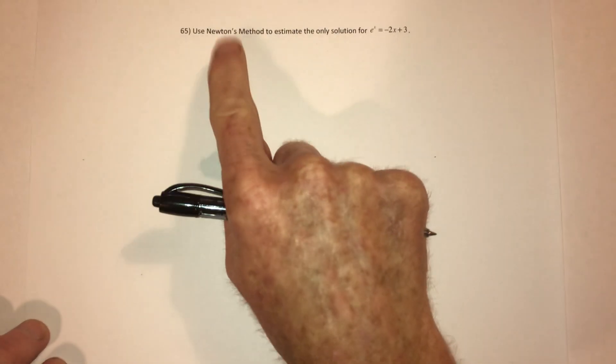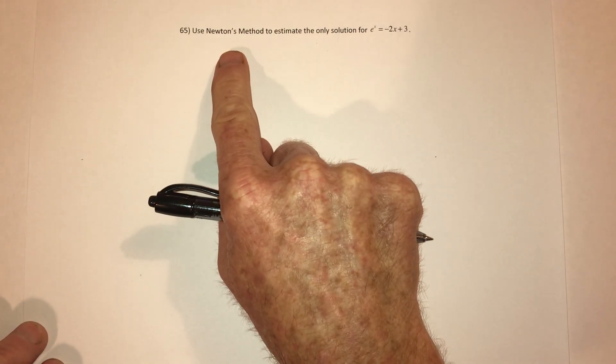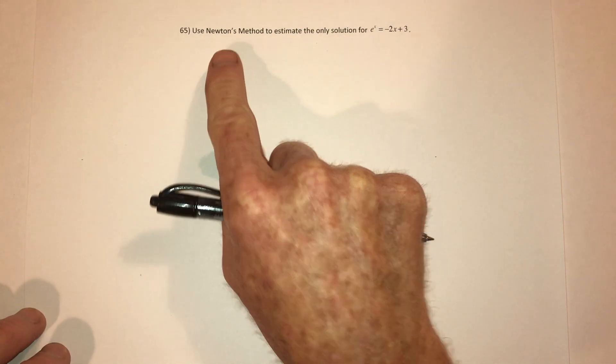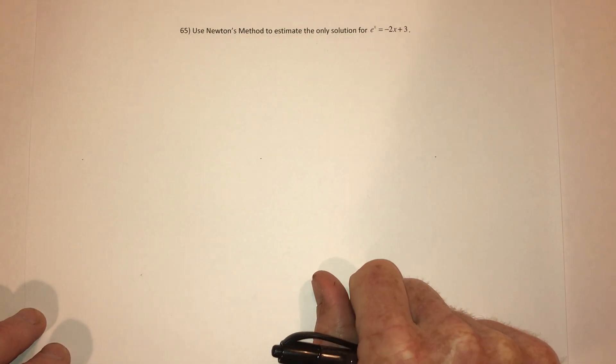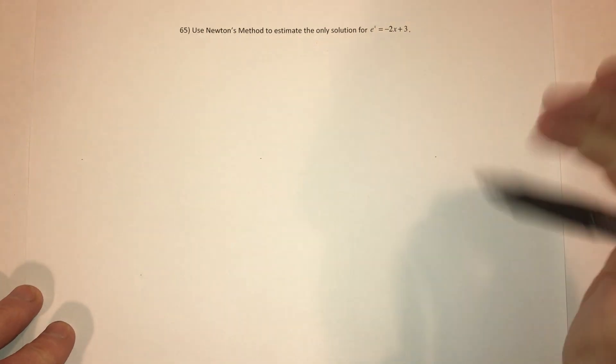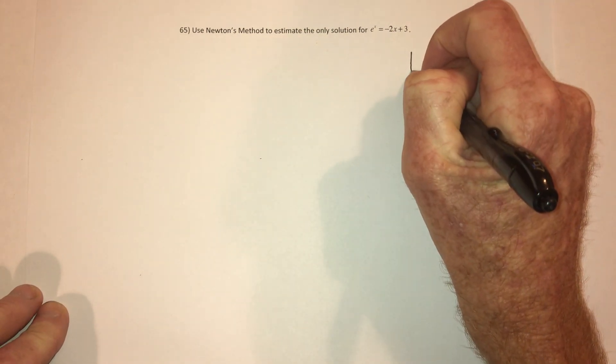Well, here's a problem that I really like, Newton's method. So this is a 400-year-old method for solving equations. When does e to the x equal the negative 2x plus 3?